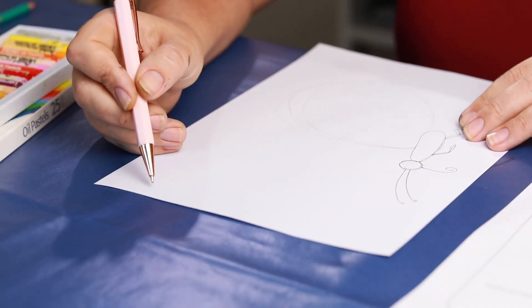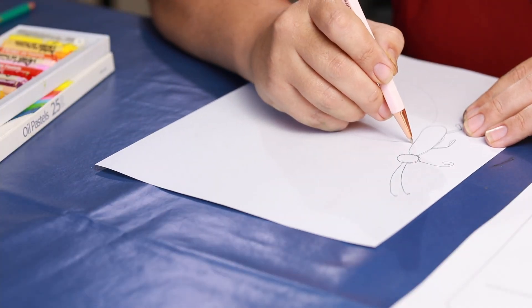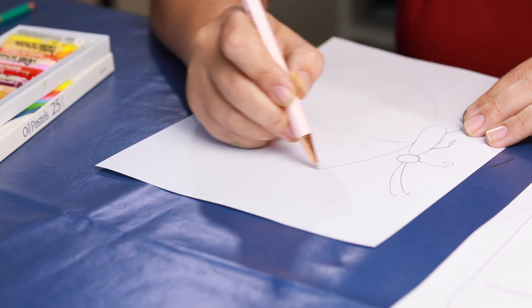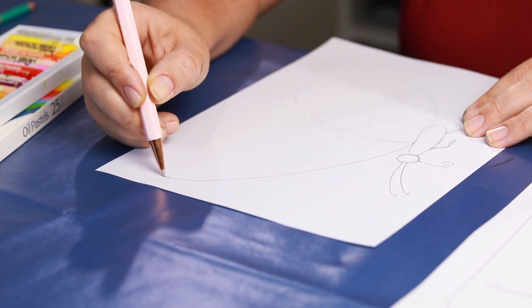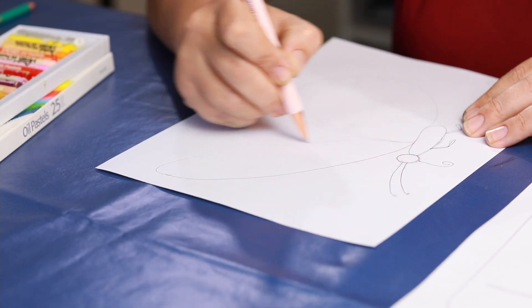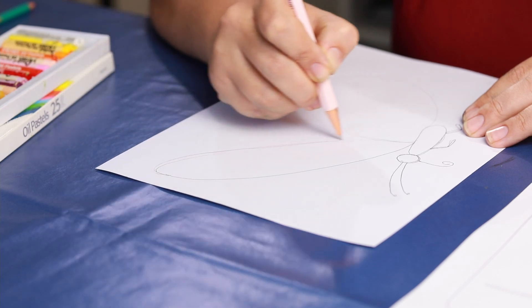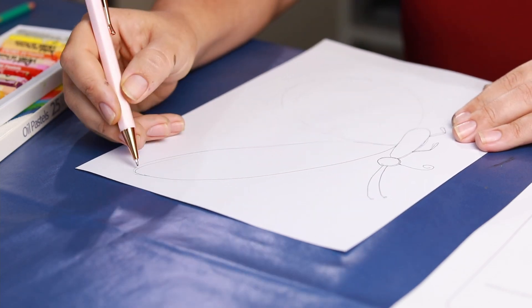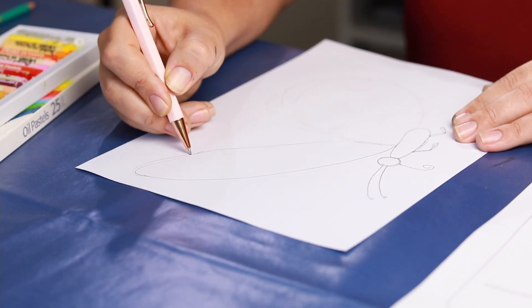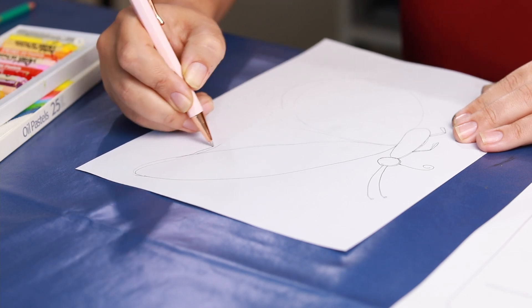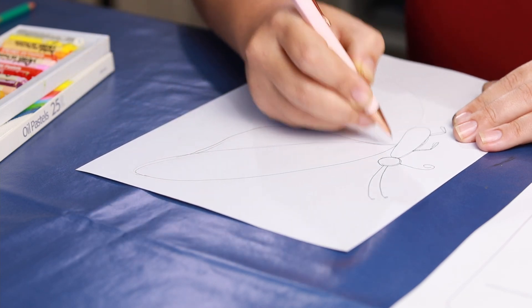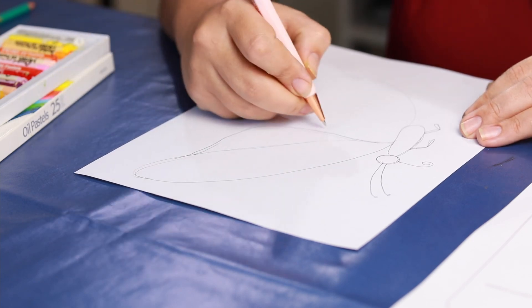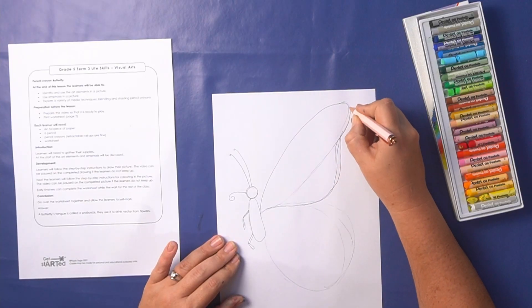Okay now we're going to do his top wings. I'm going to start with an oval so from his body I'm going to draw an oval up as high as I want that wing to come. And then from this oval let it come in a little bit and then you can bring it down and join the bottom wing. So we've used this oval to help us get the shape of the top wing.